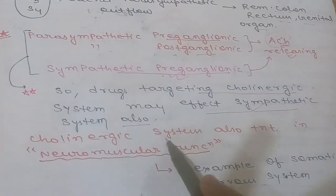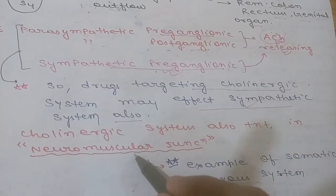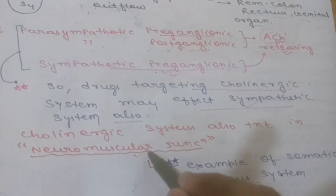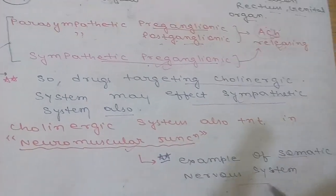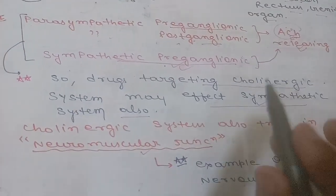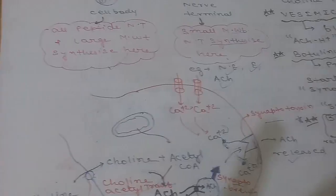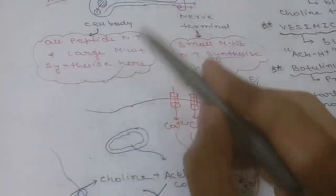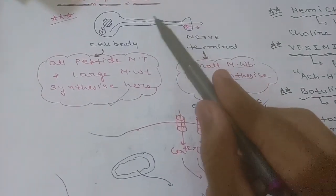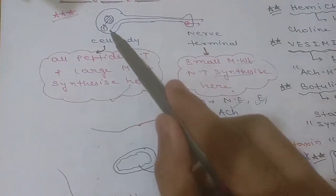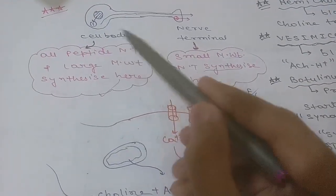The cholinergic system is also present at the neuromuscular junction, which is an example of the somatic nervous system, not the autonomic nervous system. Now we will focus on acetylcholine synthesis.